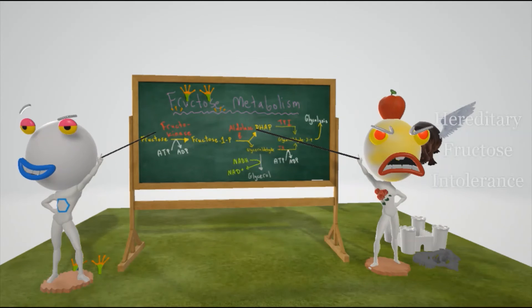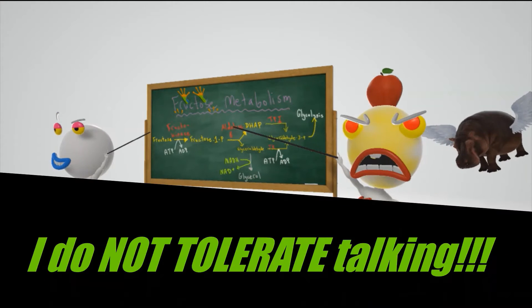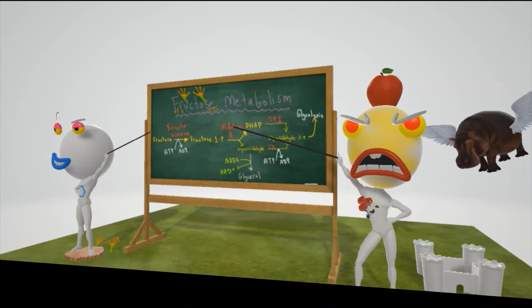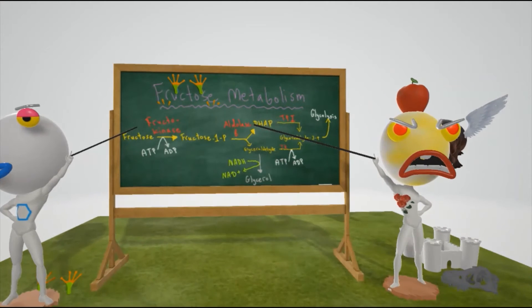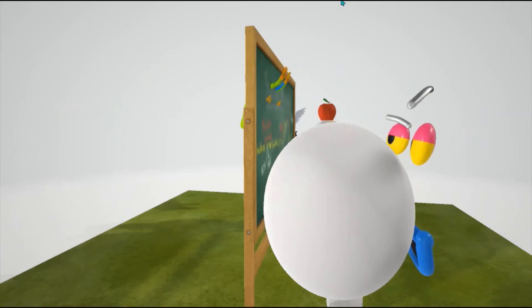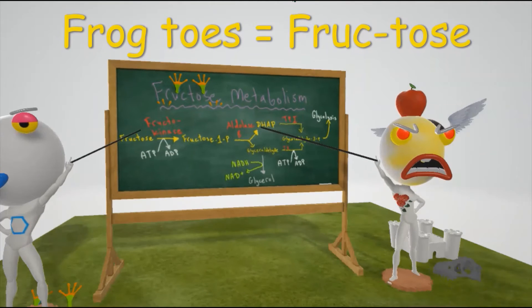Here we're going to be discussing hereditary fructose intolerance, represented by this teacher who says, "I do not tolerate talking." I do not tolerate talking for intolerance, because this is on hereditary fructose intolerance. On the board over here, we have a picture of fructose metabolism, represented by this frog toes. The frog is sticking his toes through the board. Frog toes are fructose.